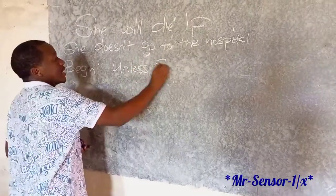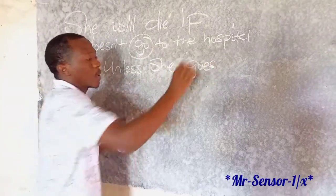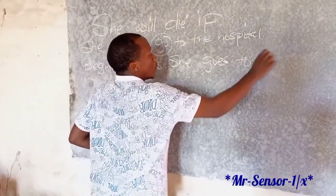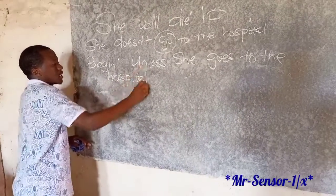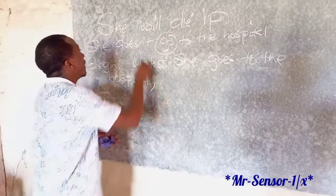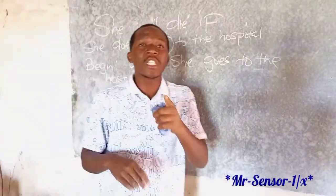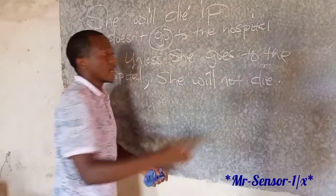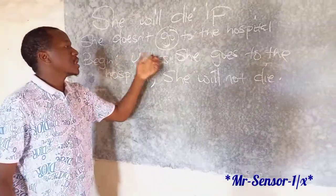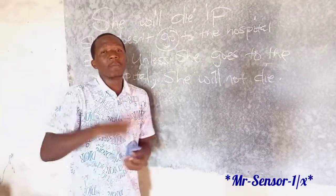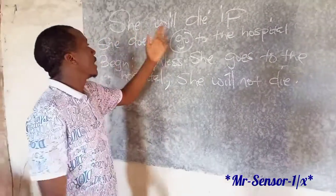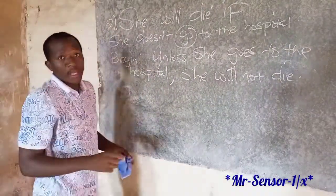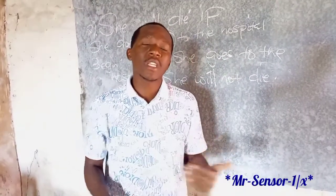So I am going to say: 'Unless she' — then we say 'goes' because it's an assumption, it's not happening right then. 'Unless she goes to the hospital,' put a comma — what will happen now is that she will not die, because the condition has been followed. So: 'Unless she goes to the hospital, she will not die.' This implies the original sentence: 'She will die if she doesn't go to the hospital.' That was example two — expect the same approach when you face this in an exam.